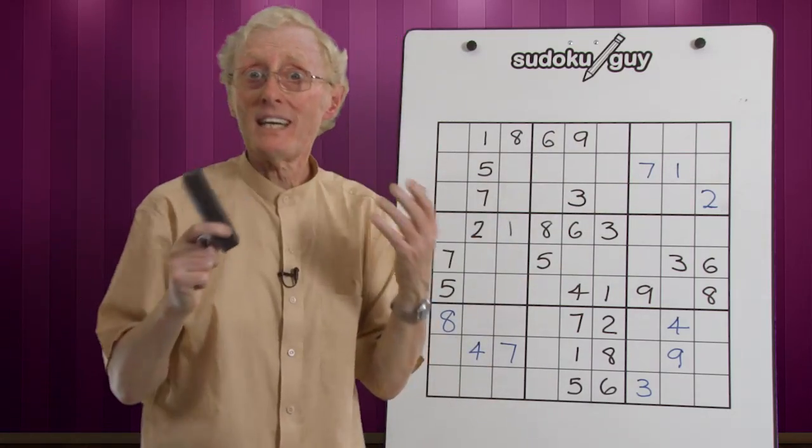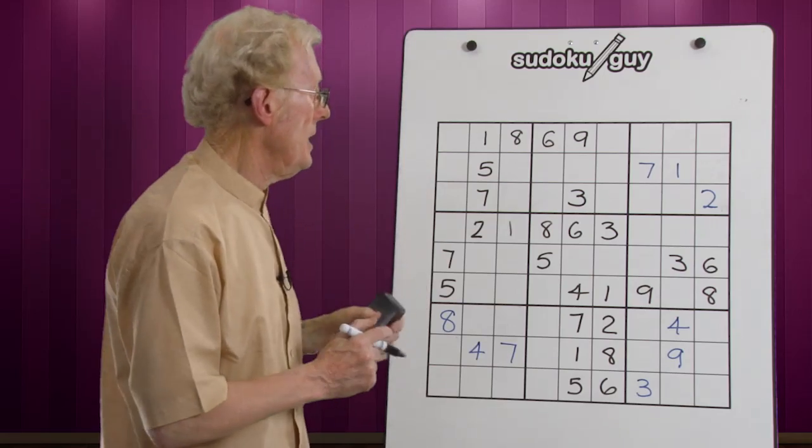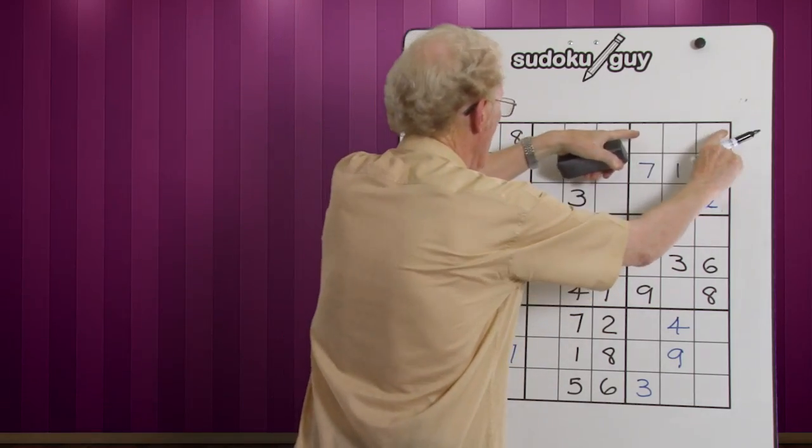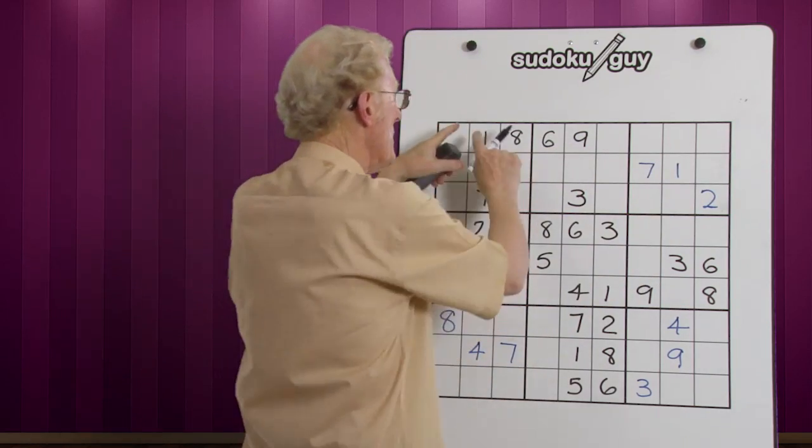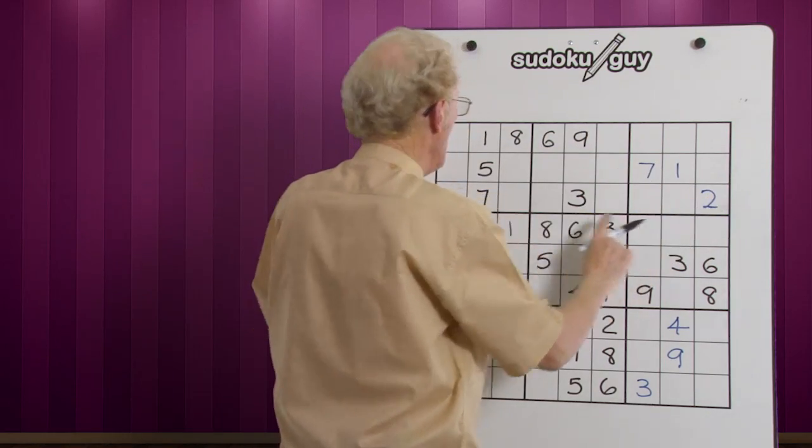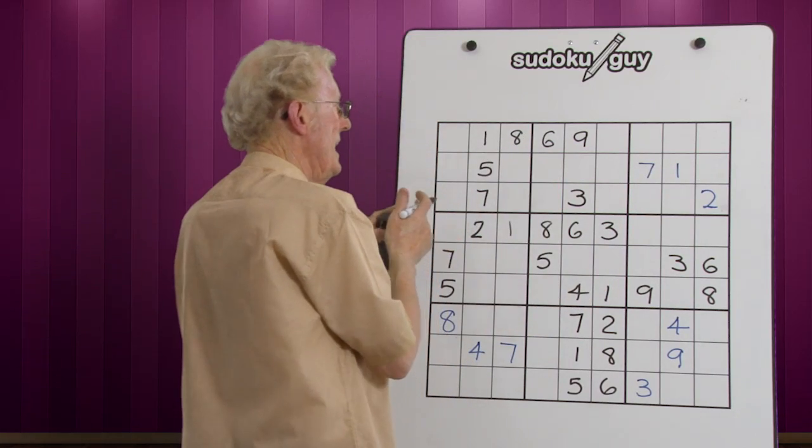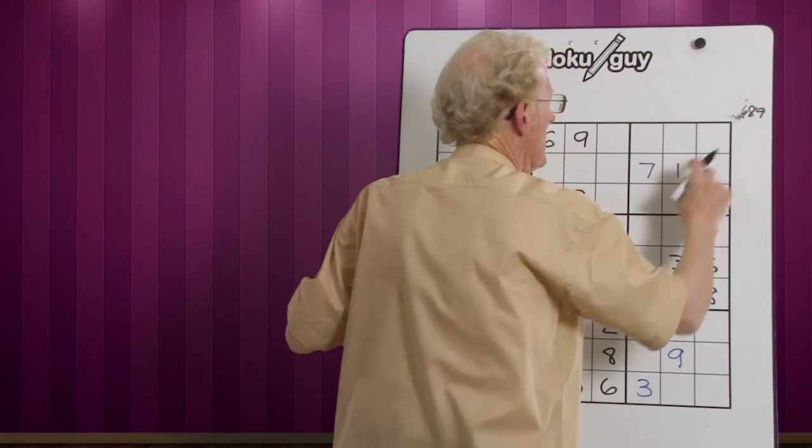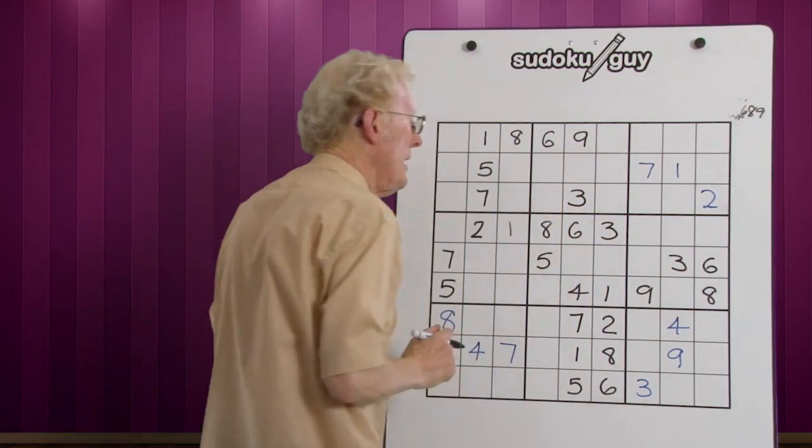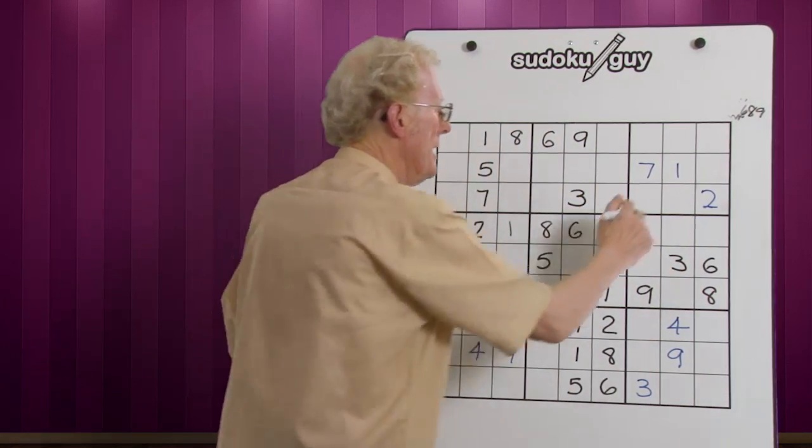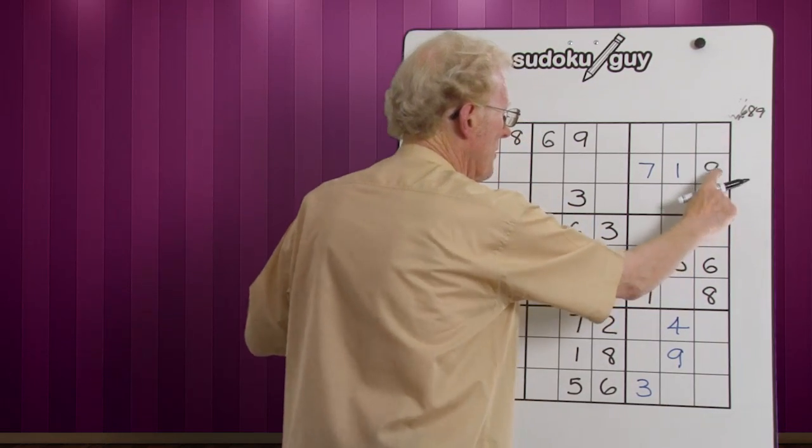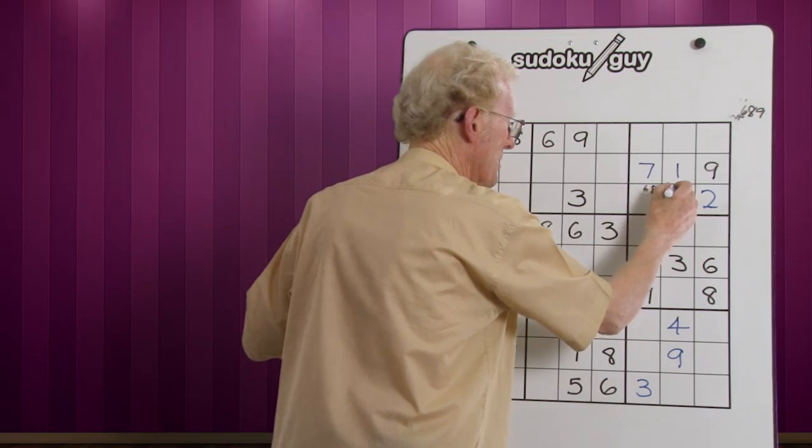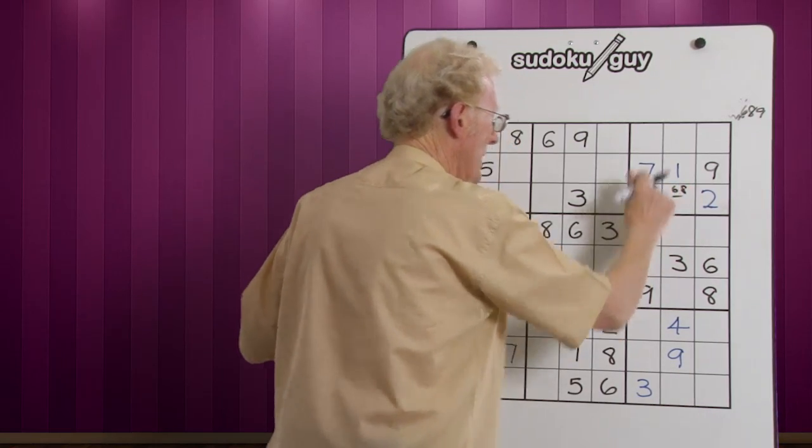Once you've got that, we use the same technique we used in our last lesson. We look at this and say these numbers up here cannot be up there. We look to see what numbers are already here and we already have a one. So six, eight, and nine have to go in these spots. The nine has to go there because we have a right, left, and center. So that makes these two a six-eight matching pair. That was quick, wasn't it?